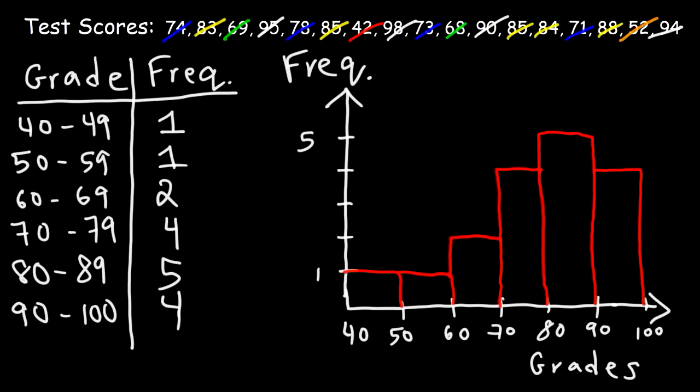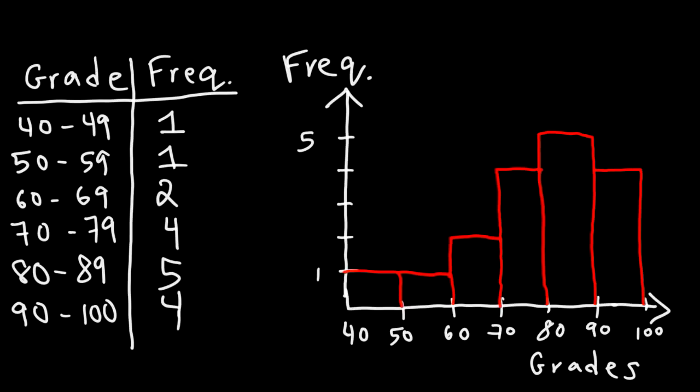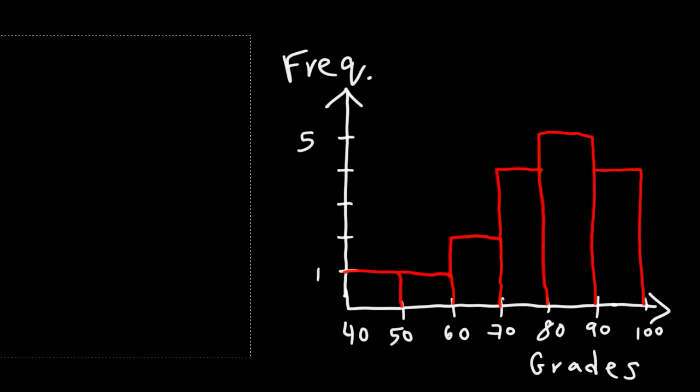Now, here's a question for you. Using the histogram that we have on the board, would you say the data is symmetric, or would you say it's skewed to the right or skewed to the left? What would you say?